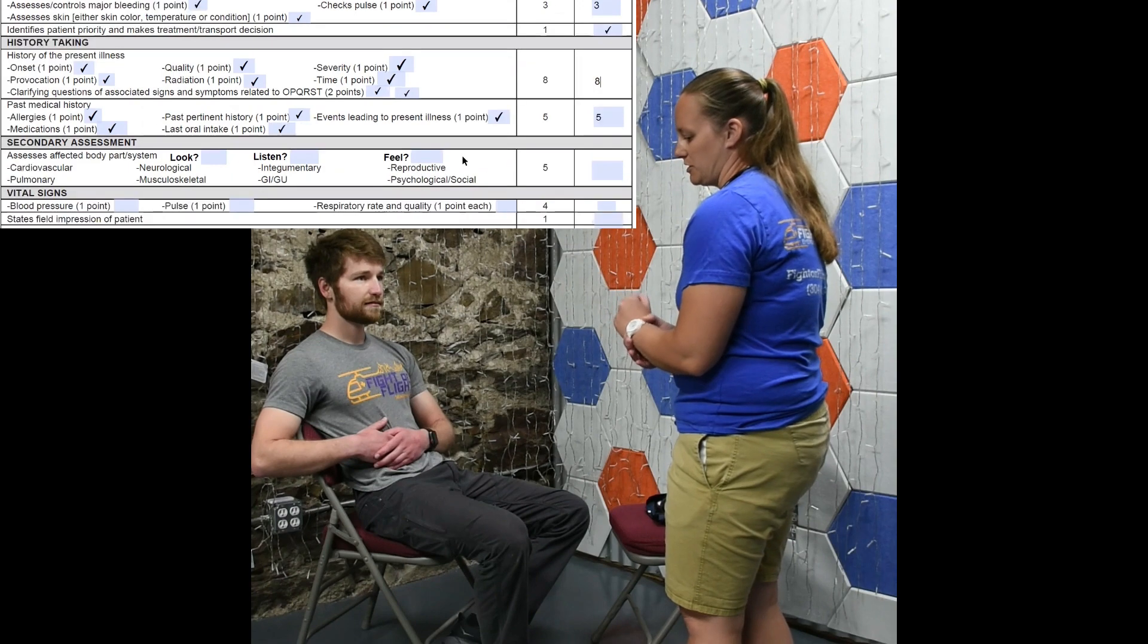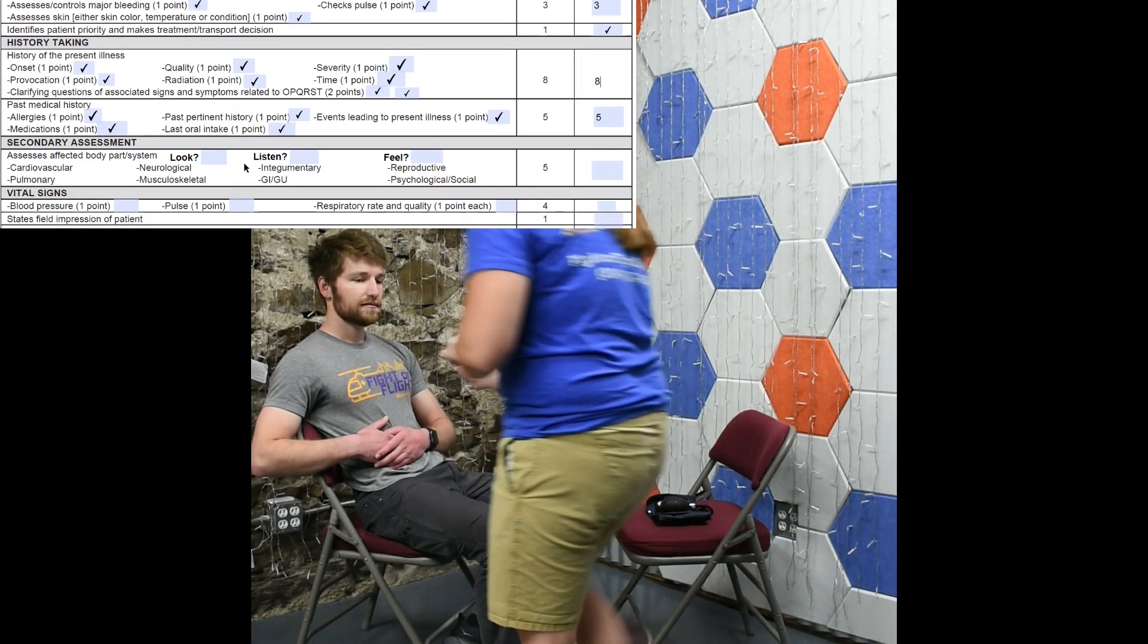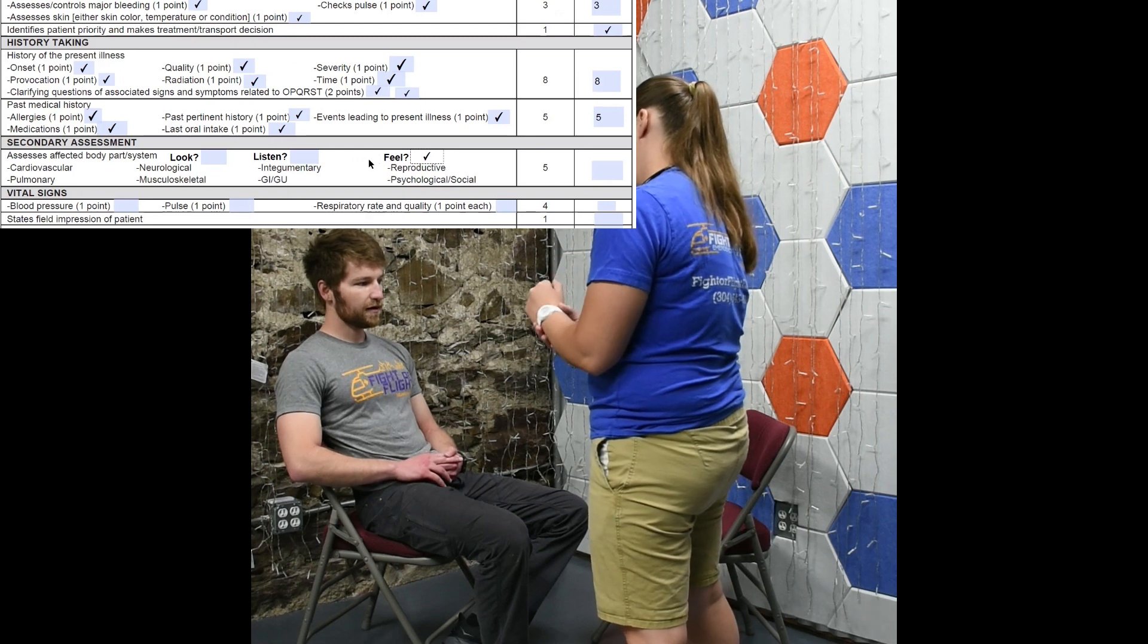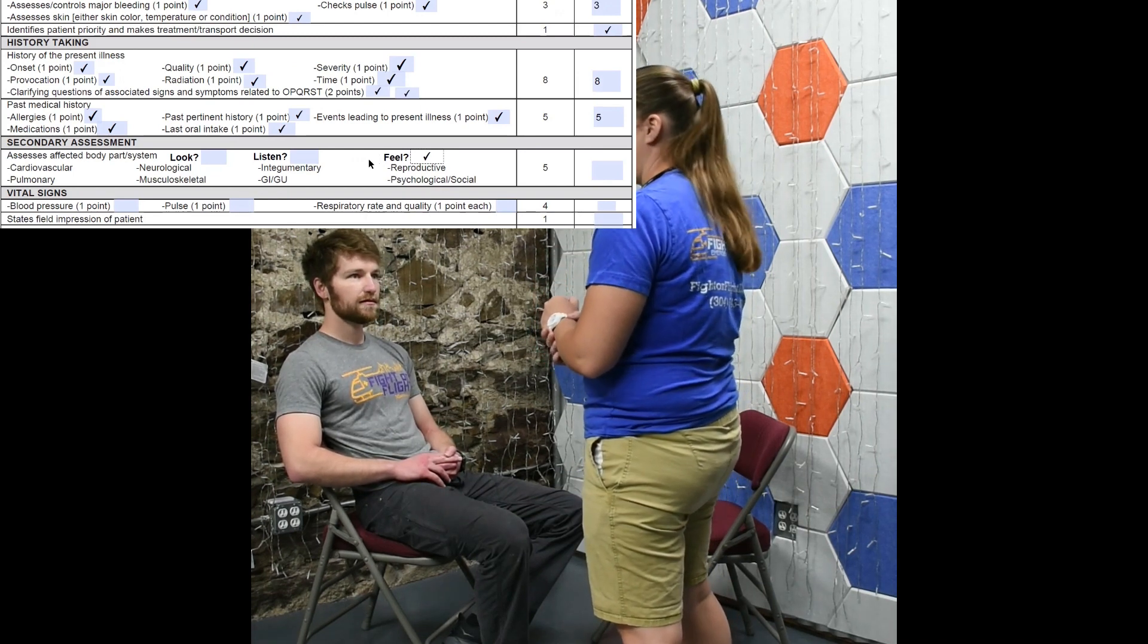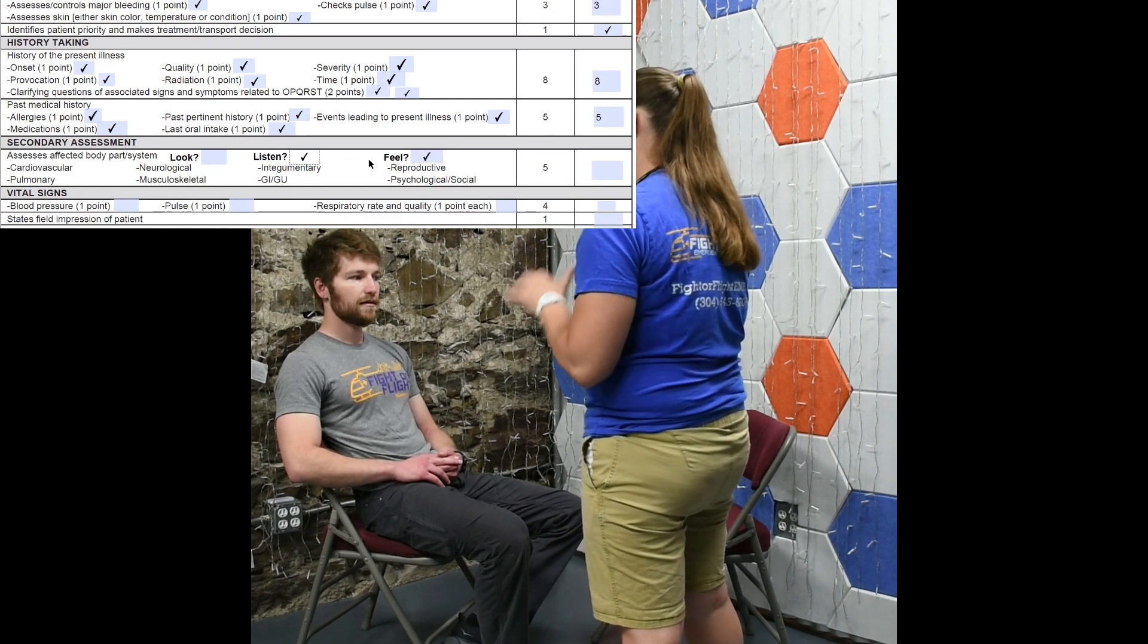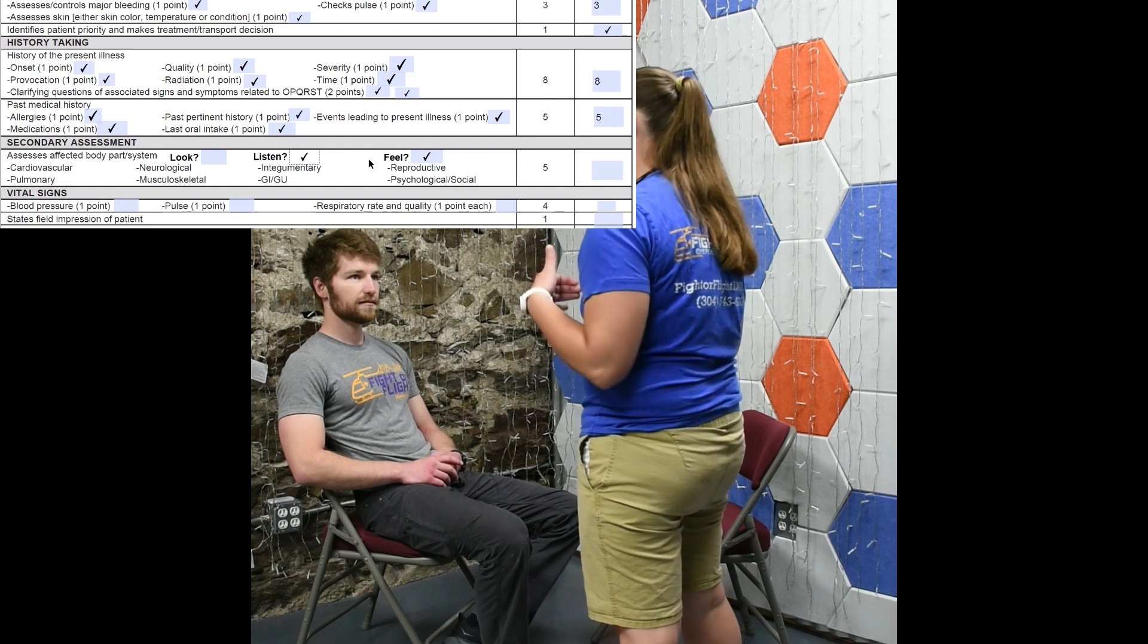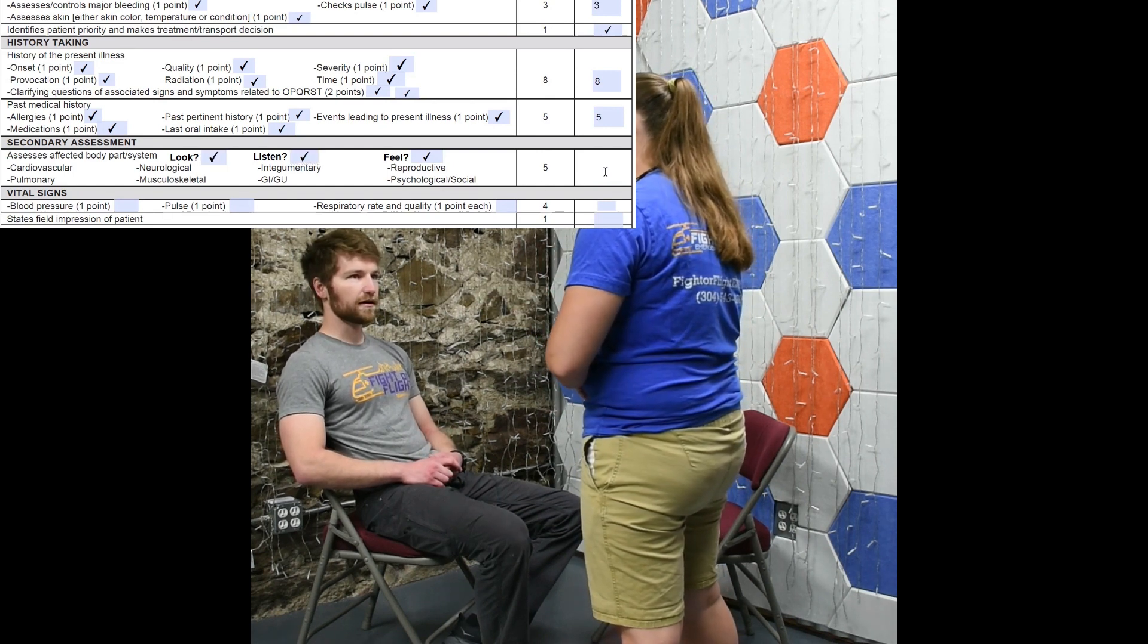Well, at this time we'll move on to our secondary assessment. I'm going to palpate your abdomen. Do I find anything unusual when I palpate? Everything appears soft and tender besides the lower right quadrant. I'm going to auscultate your bowel sounds and your breath sounds. Do I find anything abnormal there? You still hear normal bowel sounds and you hear normal breath sounds. And I'm going to expose your abdomen. Do I see anything unusual? Nothing. Any redness or anything? Nothing out of the ordinary.